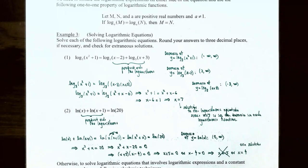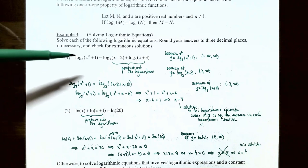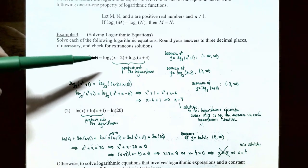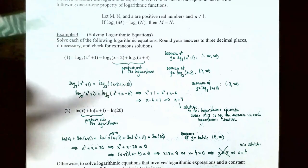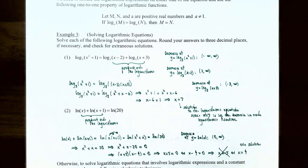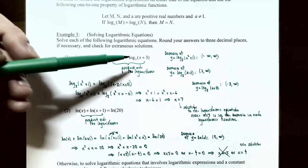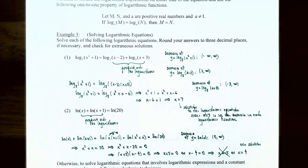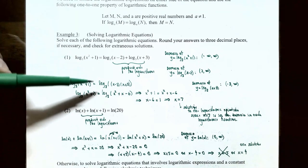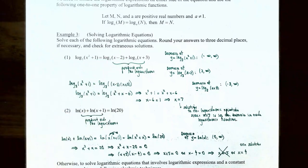In Example 3, we solve logarithmic equations. Problem 1: solve log₃(x²+1) = log₃(x−2) + log₃(x+3). On the right side you have a sum of two base-3 logarithms, so use the product rule to combine them. Multiplying the arguments gives log₃(x²+1) = log₃((x−2)(x+3)). Using FOIL, the right side becomes log₃(x²+x−6).